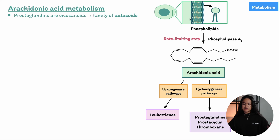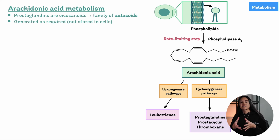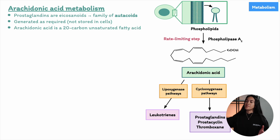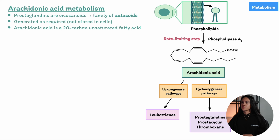What makes eicosanoids unique is how they are produced. Unlike other mediators like histamine or neurotransmitters, which are made ahead of time and stored in vesicles, eicosanoids are only made when the cell needs them. This is because their chemical structure doesn't allow them to be stored in vesicles. Eicosanoids like prostaglandins are lipid soluble, meaning they can easily pass through the membranes of vesicles where other mediators are usually stored. As a result, they can't be stored in advance and must be synthesized on demand.